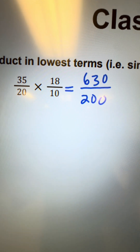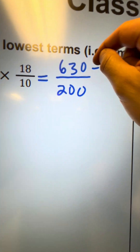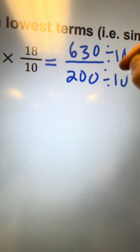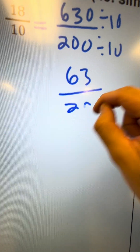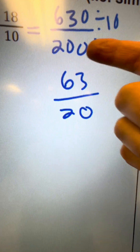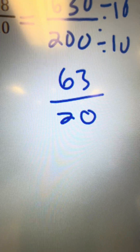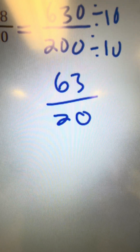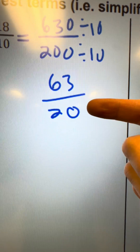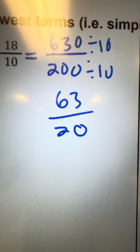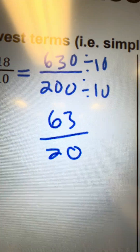In this case, it doesn't look too bad because I know I can divide each of these by 10, which gives me 63 over 20. Then I still have to do the prime factorization of these two numbers to figure out the common factors. So if you're good at your multiplication facts, sometimes it's easy to see what you can divide them each by. If you don't know your multiplication facts, you still have to do the prime factorization to expose the common factors.